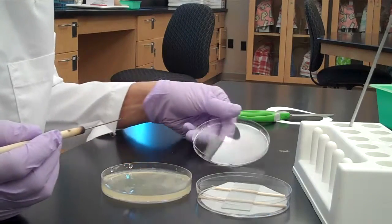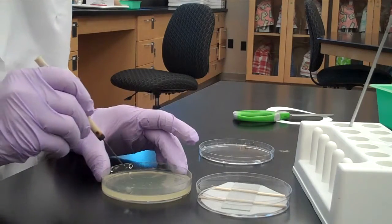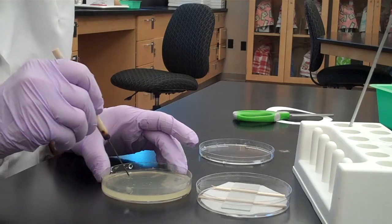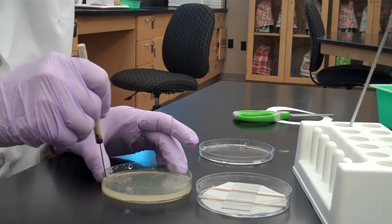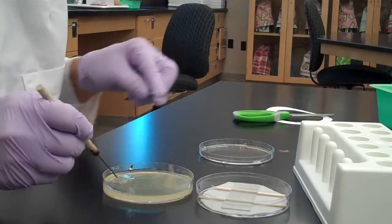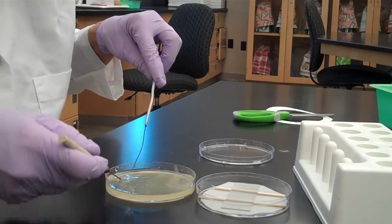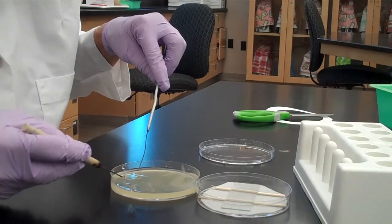Use a sterilizing dissecting needle and cut an agar block out of an SDA plate about the size of a cover slip. Use the dissecting needle and a sterilized loop to move the agar brick over to the slide.